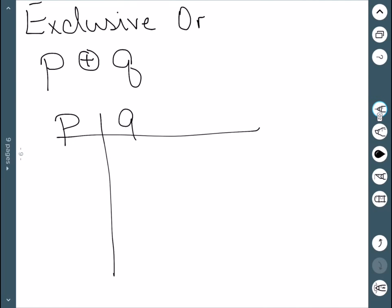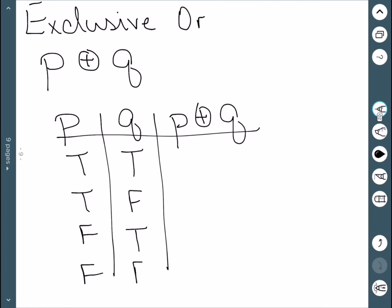We also have what's known as the exclusive OR, and this is represented like this. And this one is the one where we exclude the case of being both. This is one or the other, but not both. So our truth table. Here we have both, so it would be false. We want one or the other. So here's the truth table for the exclusive OR. This is used a lot less in logic than the other OR, which is also known as the inclusive OR.